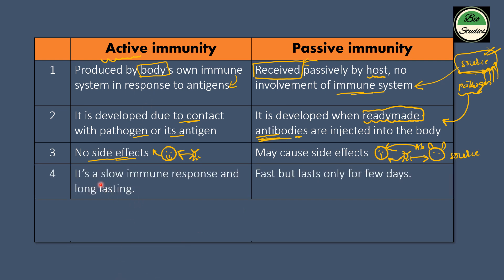Active immunity is very slow, but it is long-lasting. Passive immunity is fast, but lasts only for a few days.